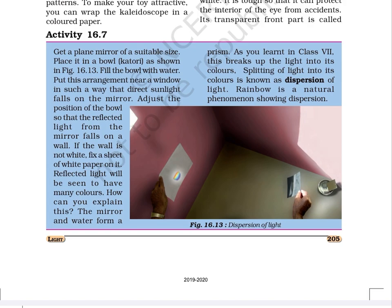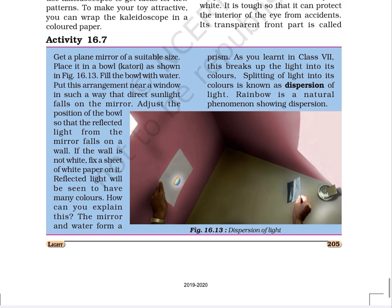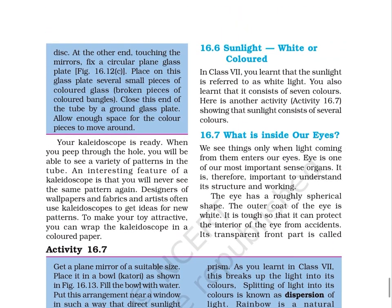Section 16.6: Sunlight — White or Colored. In Class 7, you learned that sunlight is referred to as white light and that it consists of 7 colors. Activity 16.7 shows that sunlight consists of several colors.